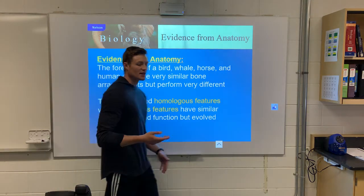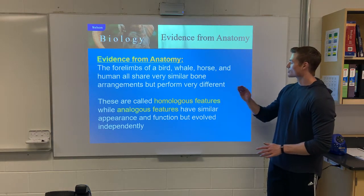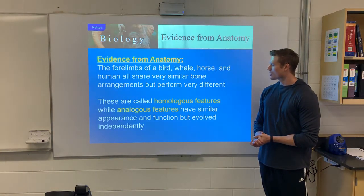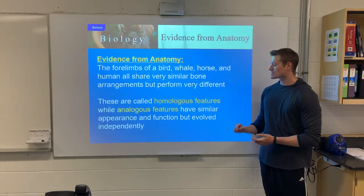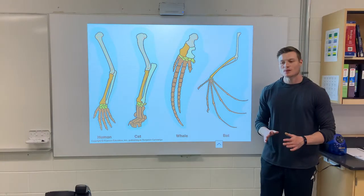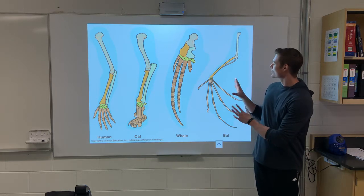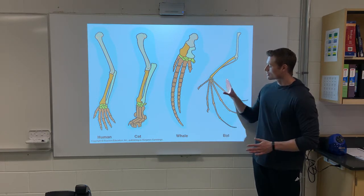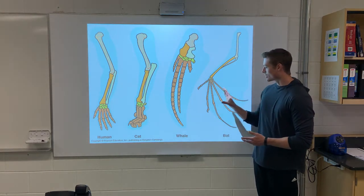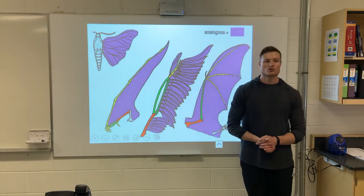Another piece of evidence comes from anatomy. If you look at the four limbs of a bird, a whale, a horse, and a human, they're different — they all have different functions — but they share a similar bone arrangement. We refer to this as a homologous feature: different function but similar structure. We see similar bone arrangements across a bat wing, whale flipper, cat paw, and human hand. Then we move to an analogous feature.